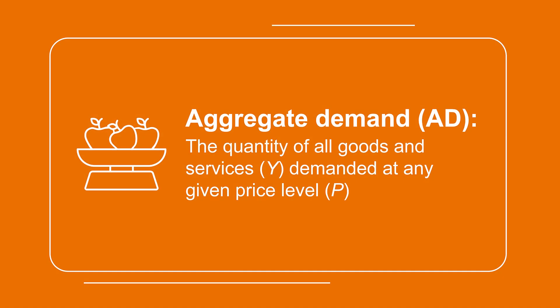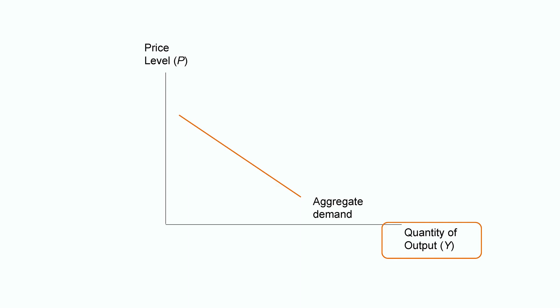Economists define the aggregate demand relationship as the quantity of all goods and services demanded at any given price level. So aggregate demand, or AD for short, is a relationship between Y, the quantity of all goods and services, and P, the price level. To graphically illustrate the aggregate demand, we need to have output Y on the horizontal axis and price P on the vertical axis.